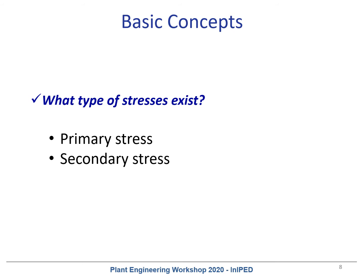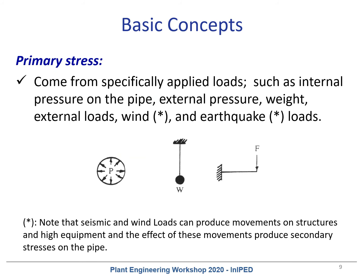What types of stresses exist? We have two principal types: primary stress and secondary stress. Primary stress comes from applied loads such as internal pressure, external pressure, weight, external loads, and wind. These come from forces. This is the principal difference from secondary stress.